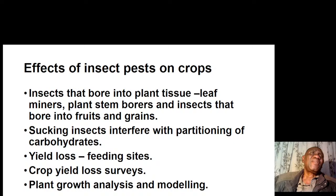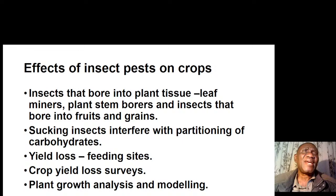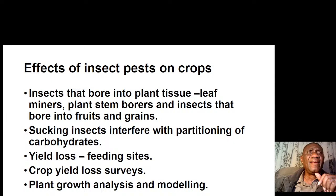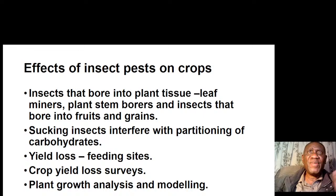Effects of insect pests on crops: insects that bore into plant tissue — like leaf miners, plant stem borers, and insects that bore into fruits and grains — may be difficult to control and can destroy fruits and grain, leading to serious crop loss. Sucking insects may interfere with the partitioning of carbohydrates — the movement of carbohydrates from the leaves to the seeds being formed will be interrupted, and this can lead to crop yield losses.